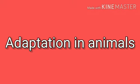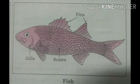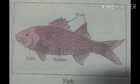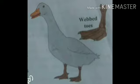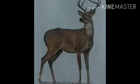Adaptation in animals means they are adapted to different types of weather. For example, aquatic animals such as fish and duck. Adaptation in forest and grassland animals — for example, herbivorous animals, and the lion, which is a carnivorous animal.